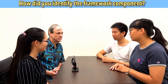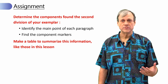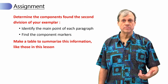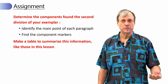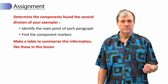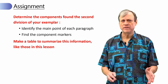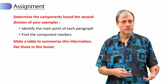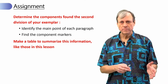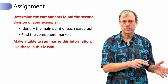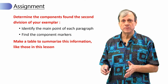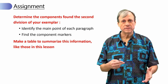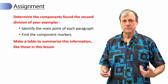Now it's time for you to do the work: look at the second division of your exemplar article and determine its components. Try to identify the main point of each paragraph as done in the previous lesson, but to find component markers you may not need to look at every single paragraph — it may be sufficient to look at the division titles. Pay particular attention to where it shifts from framework to research details for this experiment, and summarize that information in a table similar to those shown in this lesson.